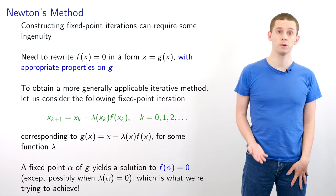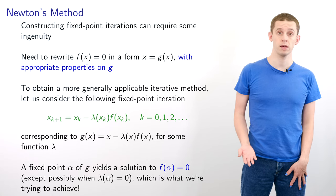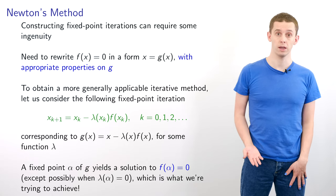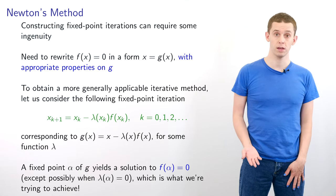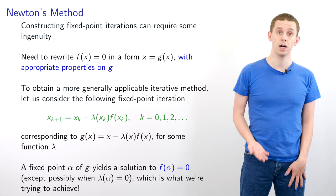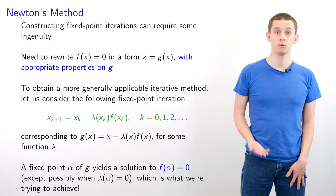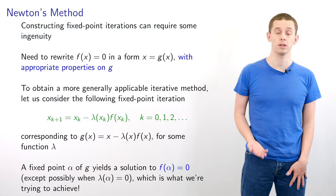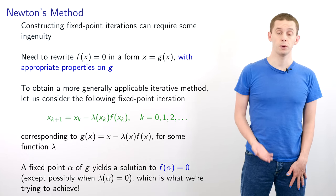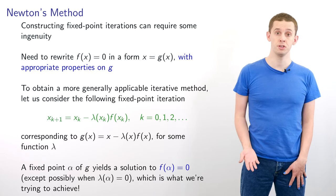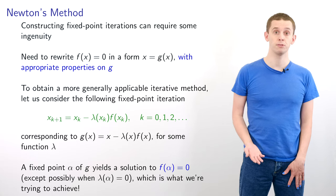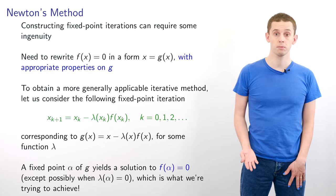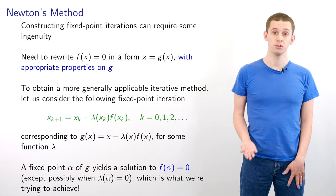So to obtain a more generally applicable method, let's now consider the following fixed point iteration. We'll say that x_{k+1} is equal to x_k minus lambda(x_k) times f(x_k), where lambda is an arbitrary function. This corresponds to g(x) = x minus lambda(x) times f(x). If we have a fixed point alpha of g, then that will give us a solution f(alpha) = 0, which is what we're trying to achieve.